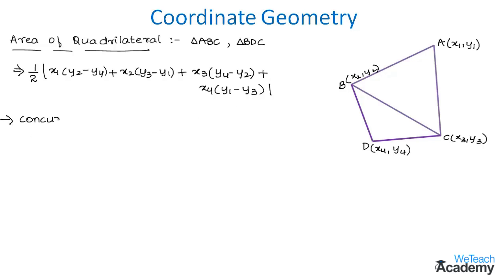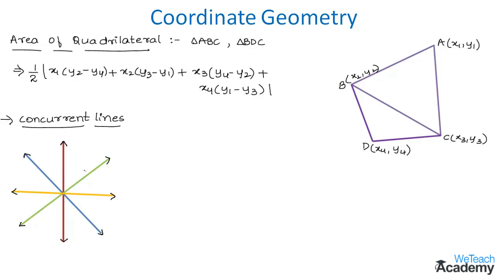Now let us discuss concurrent lines. Three or more straight lines are said to be concurrent if all the straight lines have only one common point, and this common point is called the point of concurrency, denoted by P.